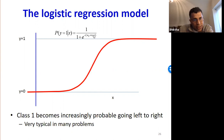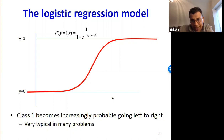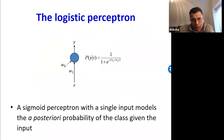When x is a large negative value, minus of minus infinity is plus infinity, e raised to infinity is infinity, 1 over infinity is 0. So this function goes to 0 when x is a large negative value. When x is a large positive value, you end up at e raised to minus infinity, which is 0, so 1 over 1 plus 0 is 1. For large positive x's, this becomes 1. In between, it changes smoothly from 0 to 1 — exactly the kind of behavior we want. By controlling w0 and w1, we can control how fast it goes up from 0 to 1 to make it appropriate for our data.